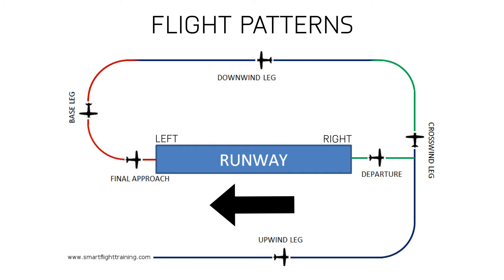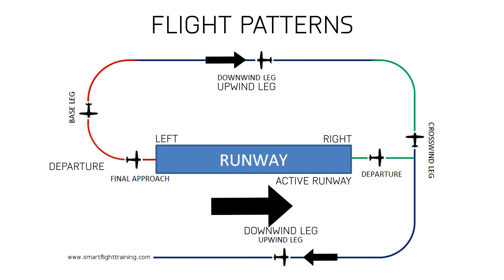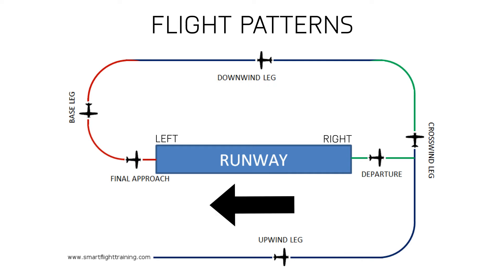If the wind was pointing in the other direction, the aircraft would have to take off and land on runway right. That means upwind leg would be at the top facing the other way, and the downwind leg would be at the bottom facing the other way. So upwind means you're flying against the wind on the other side of the runway, where you're going to swing all the way round and land — from upwind to crosswind to downwind to base leg to final approach.